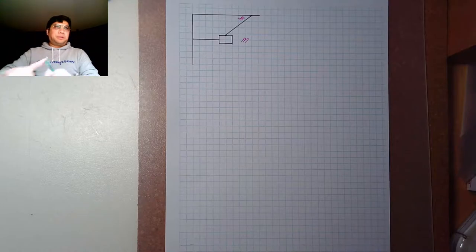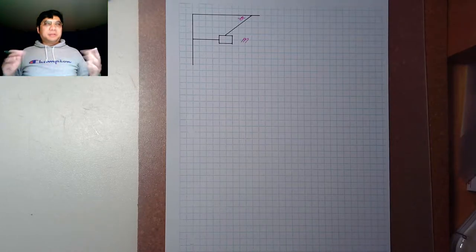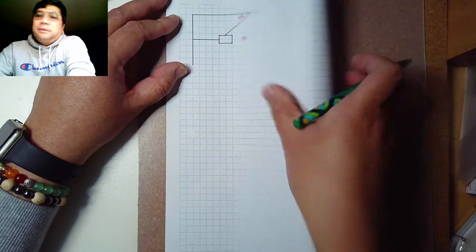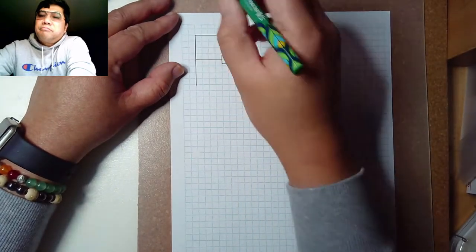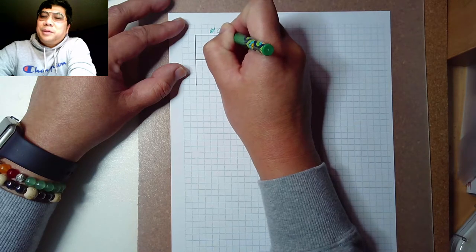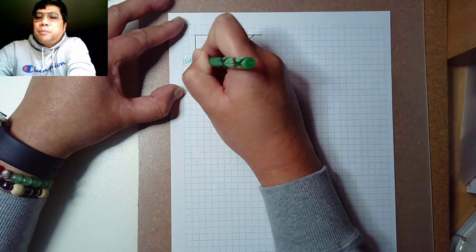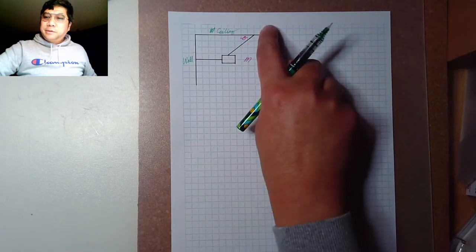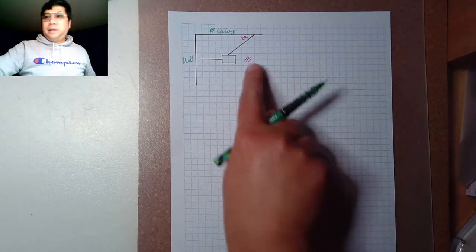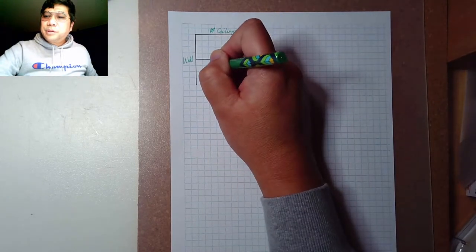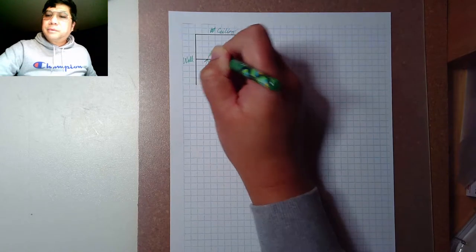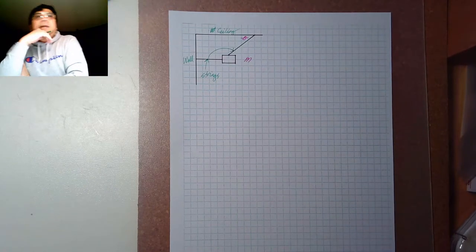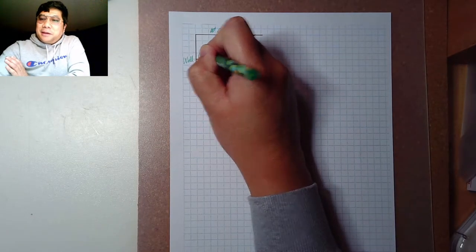Here's another problem or situation we want to analyze — it may show up in a test. This is your ceiling and this is the wall. A block or body is connected to a string attached to a point on the ceiling, and another string is connected to the wall, allowing it to hang downward. Let's call this string number one and this is string number two.